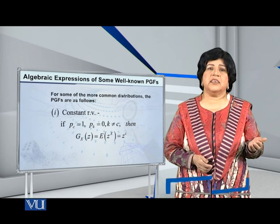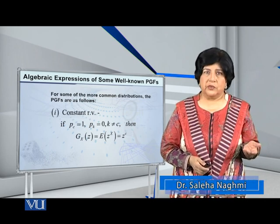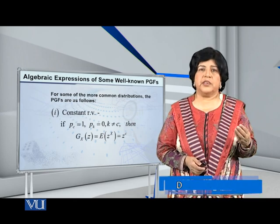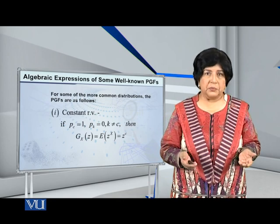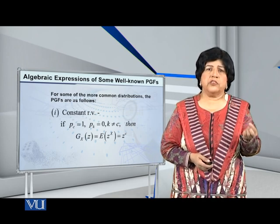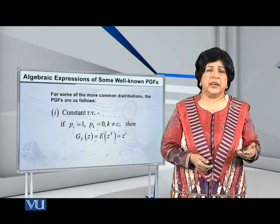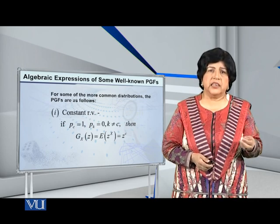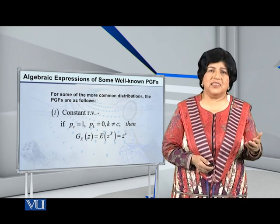Let me begin by the PGF of the constant random variable. What I mean is that I am talking about that case when it is actually not a variable but a constant. This is the degenerate distribution. So if the distribution is defined on just one single point, then the PGF will be given by Z raised to C, where C is that particular point where the entire probability lies.